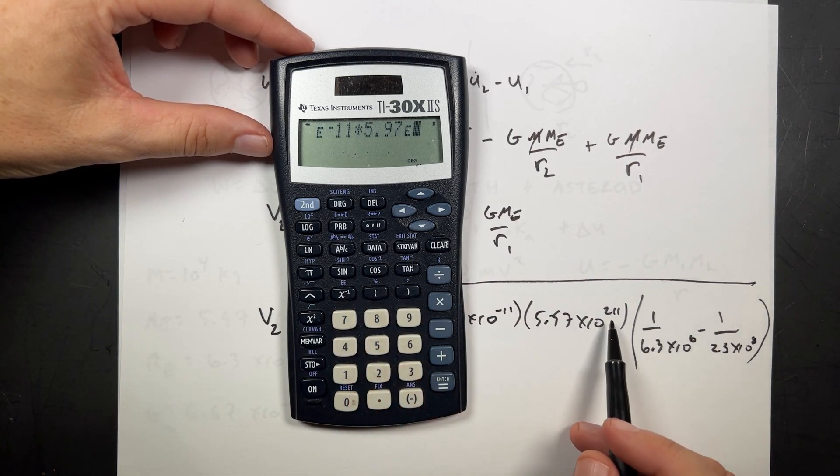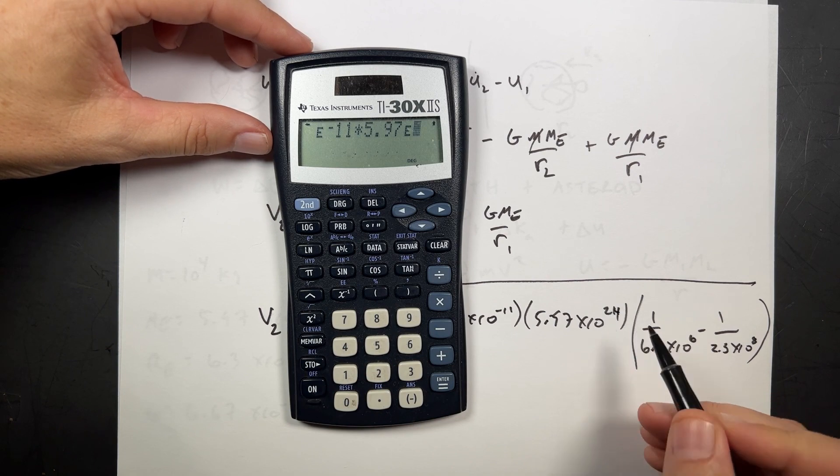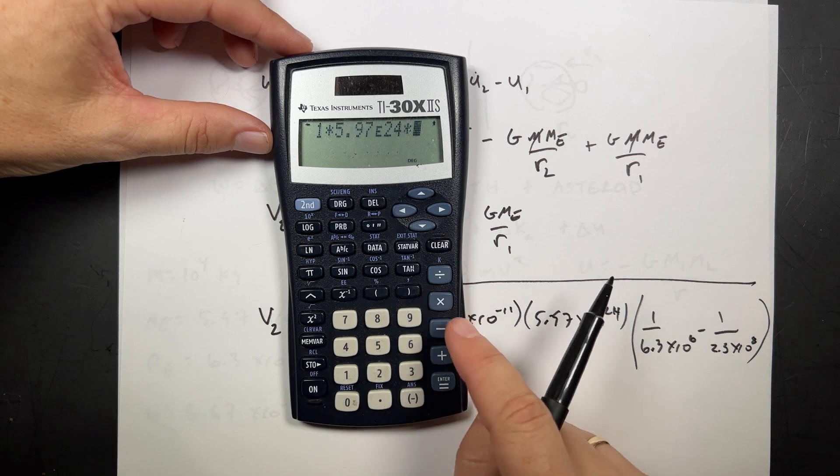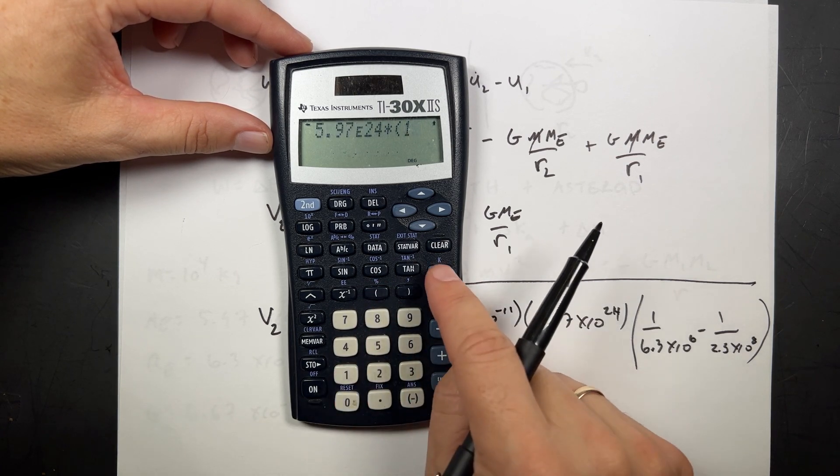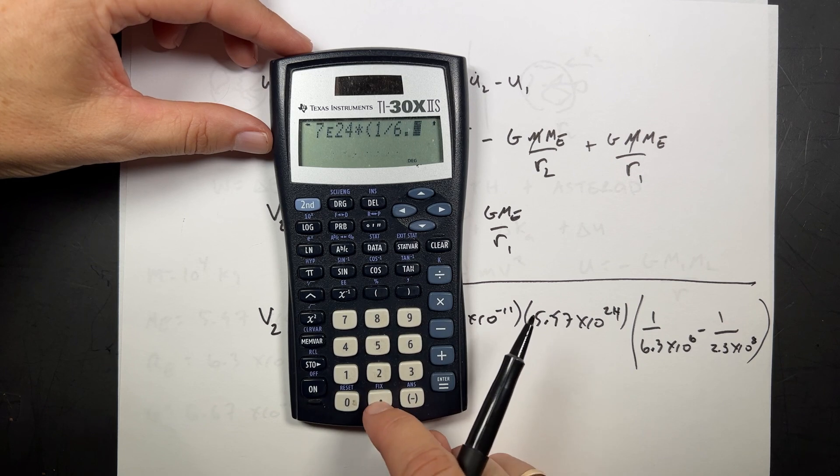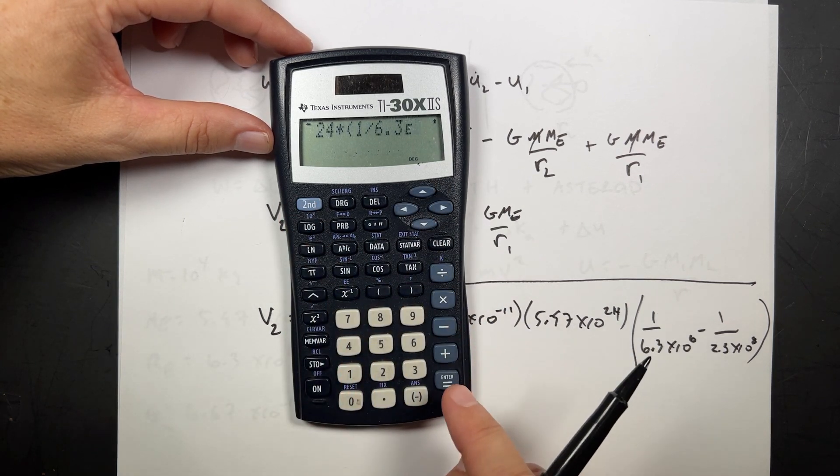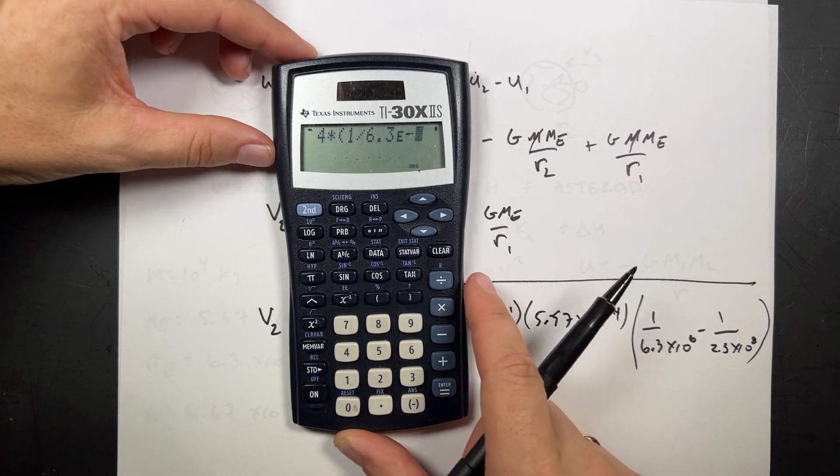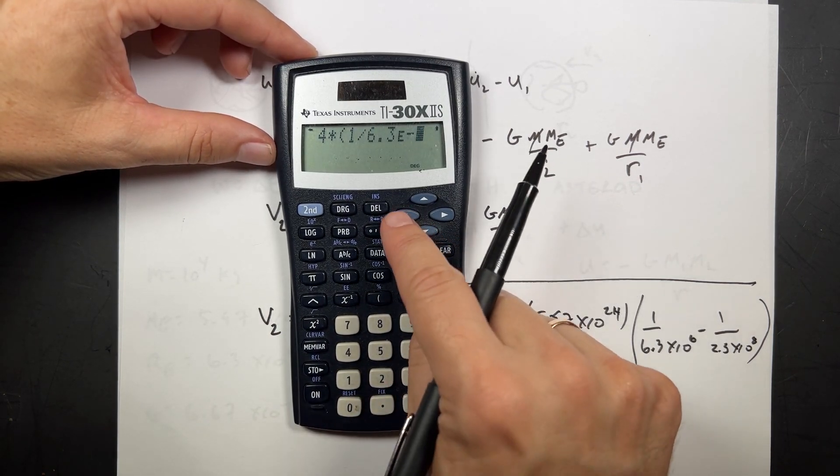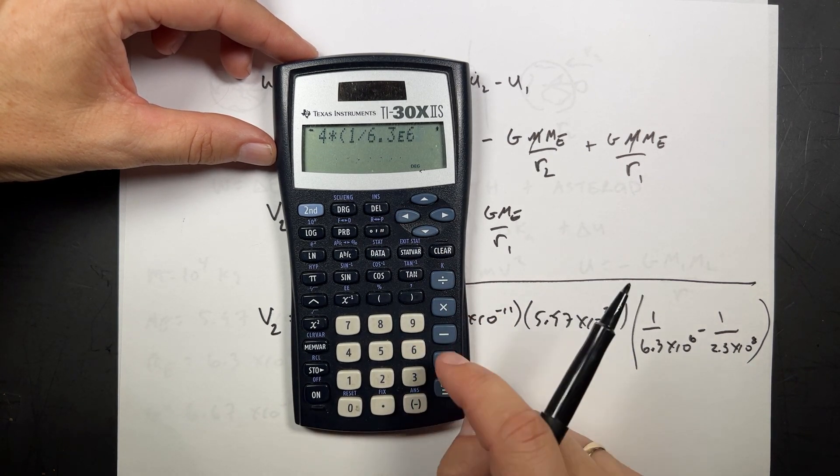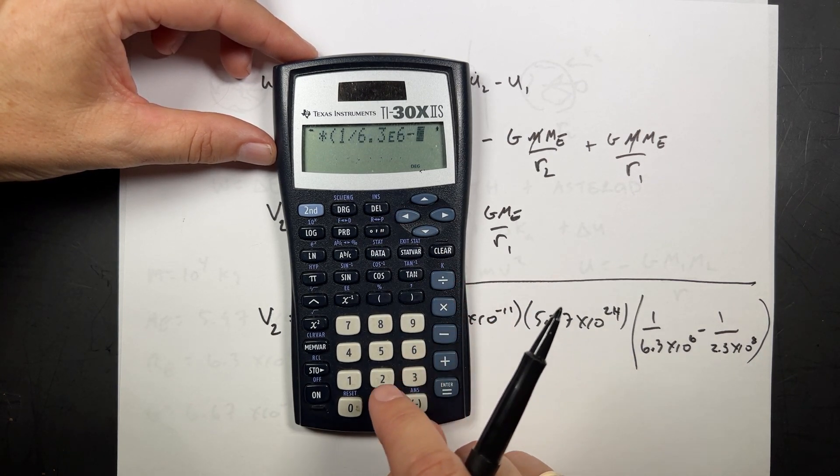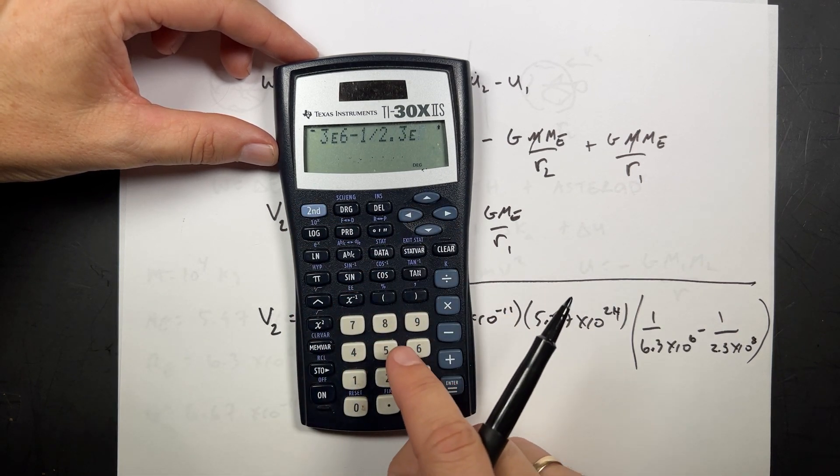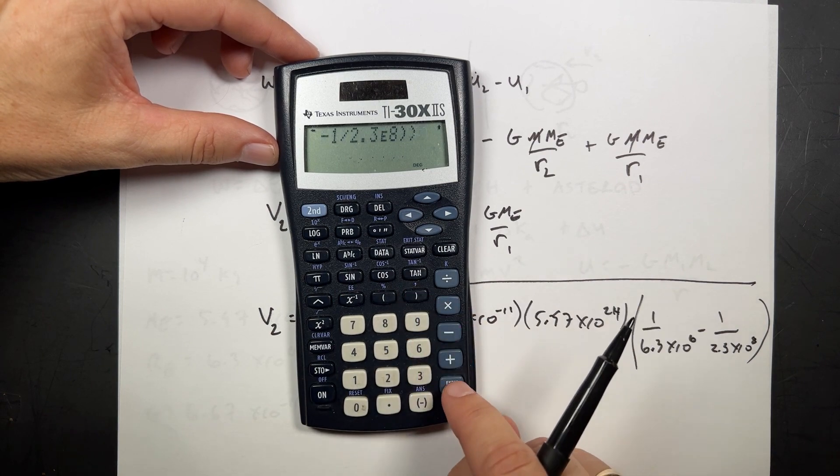Times parentheses 1 divided by 6.3 times 10 to the 6th minus 1 divided by 2.3 times 10 to the 8th. Close parentheses. Close parentheses. Close parentheses. Enter. I got it.